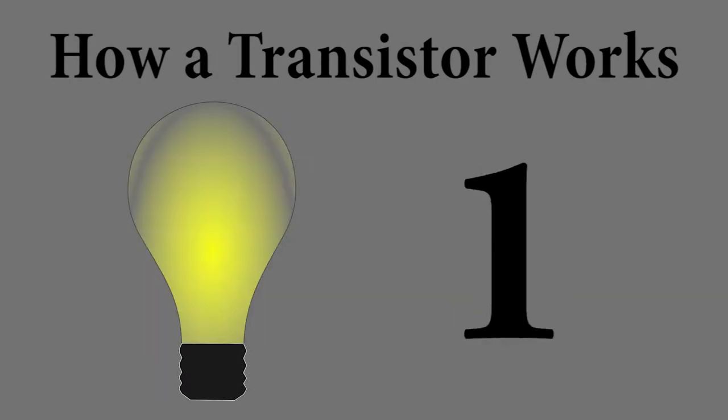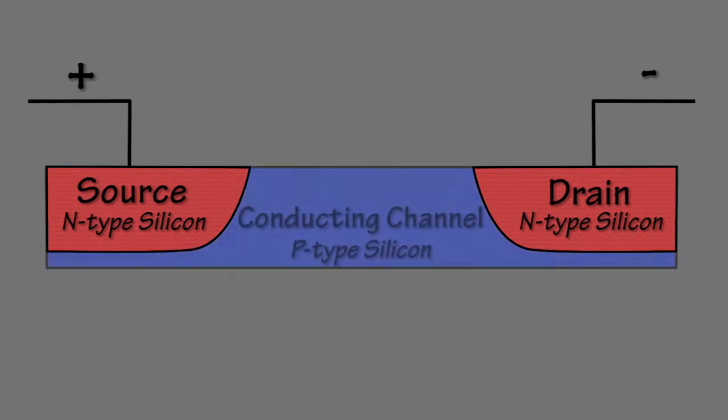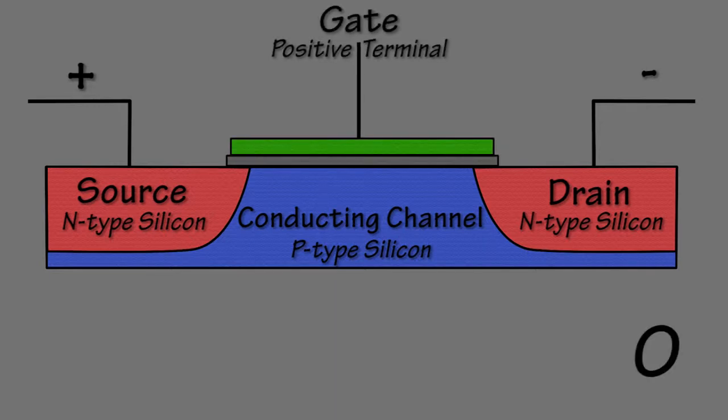Transistors are like miniature light switches and define how computers function. Put simply, transistors contain several different types of silicon. Two areas are n-type and act as conductors. Between them is p-type, which functions as an insulator while the transistor is off. Above this is a positive terminal, called the gate. A charge applied to the gate draws electrons into the p-type silicon and turns on the transistor.